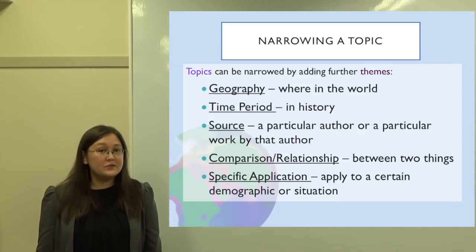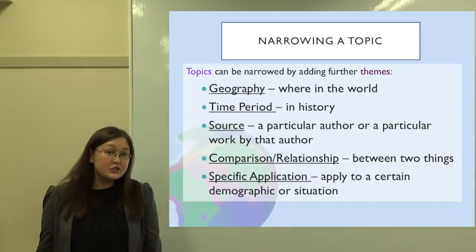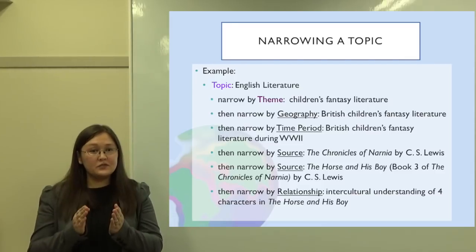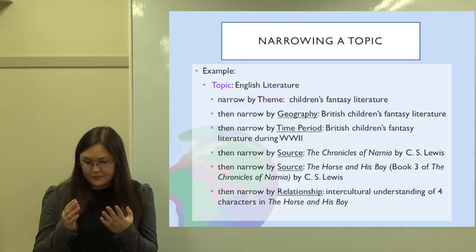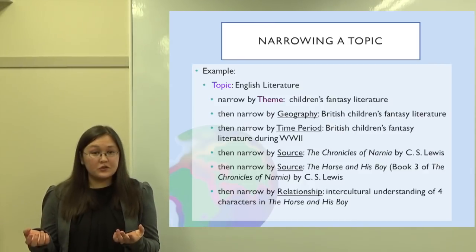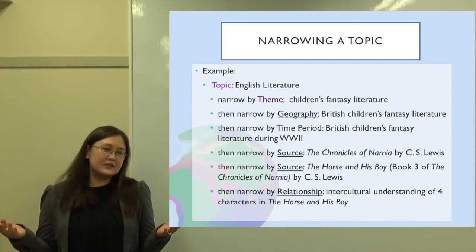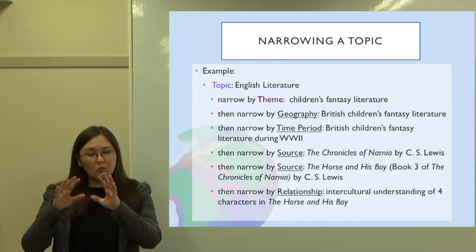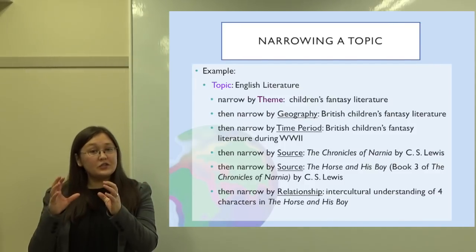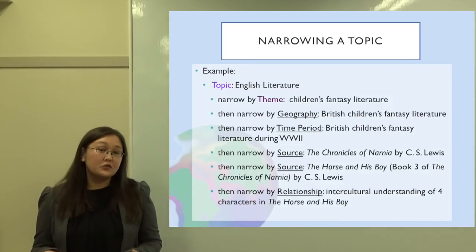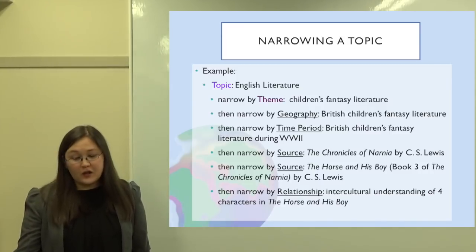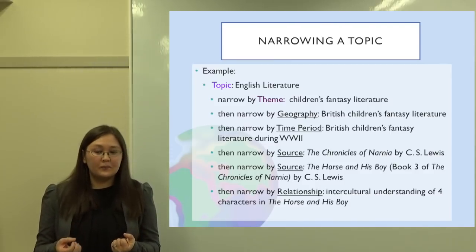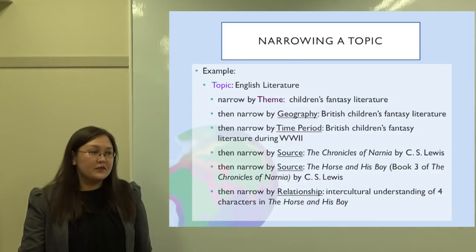As you know, we can narrow themes in many different ways, such as geography, source, and relationship. As one example, with English literature as the topic, it can be narrowed by geography to British, or by source to one author. But even one author has many books, so we can narrow it to just one book, and then within that we can narrow even more — one book has many themes, so we'll choose one: relationships between four characters regarding intercultural understanding. That's how we narrow from a very broad topic into something very specific. But even once we get there, we have to actually make the thesis statement and not trip up at this point.